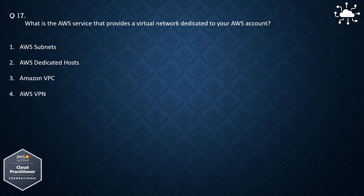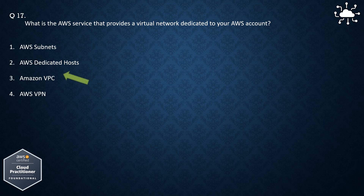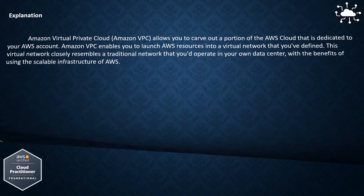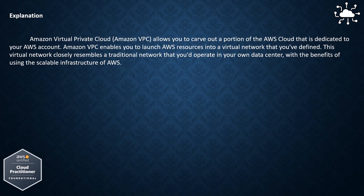Question 17. What is the AWS service that provides a virtual network dedicated to your AWS account? 1. AWS Subnets, 2. AWS Dedicated Hosts, 3. Amazon VPC, 4. AWS VPN. The correct answer is Amazon VPC. Amazon Virtual Private Cloud (Amazon VPC) allows you to carve out a portion of the AWS cloud that is dedicated to your AWS account, enabling you to launch AWS resources into a virtual network that you've defined. This virtual network closely resembles a traditional network that you'd operate in your own data center, with the benefits of using the scalable infrastructure of AWS.